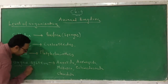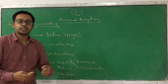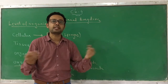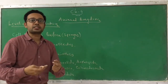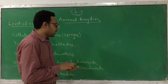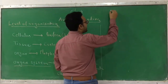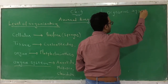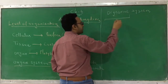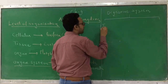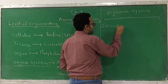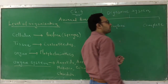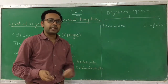When we talk about organ system level, it means they have different systems like the digestive system, respiratory system, circulatory system, nervous system, endocrine system, and many more. But within this organ system level, there are also deviations. The first deviation is regarding the digestive system. The digestive system found in these animals can be of two types: incomplete digestive system and complete digestive system.